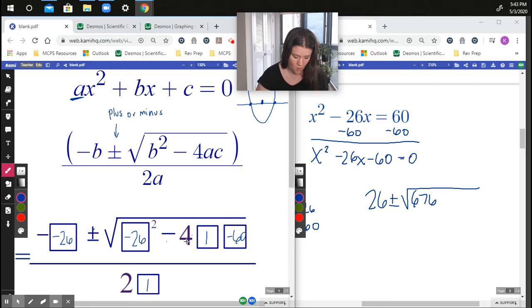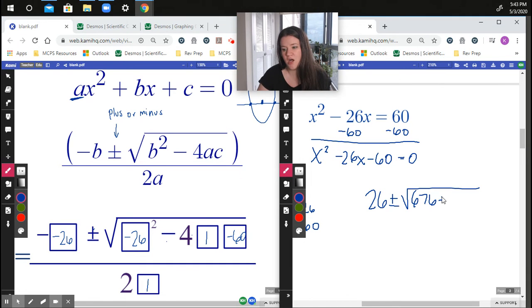So 26 squared, 676, minus four times A times C. Well, negative four times one is negative four, times negative 60 is going to be a positive 240. And all of that is over two times one, which is two.